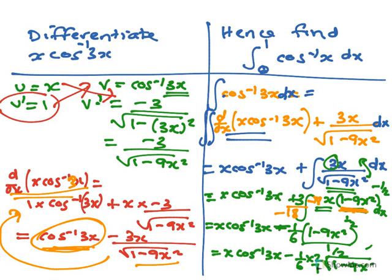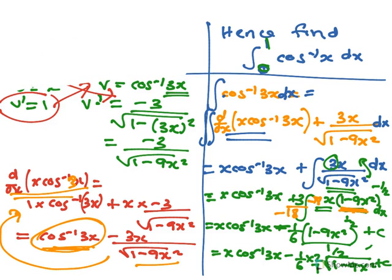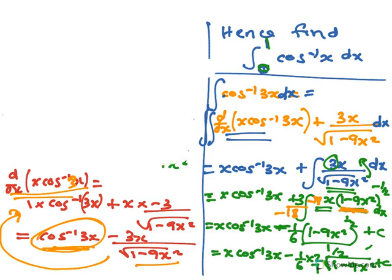So it's x·cos⁻¹(3x) minus 1/6 times 2/1, which gives the square root of 1 minus 9x², and don't forget plus c. Now we actually want to evaluate between 0 and 1, so we don't include the constant — we substitute our endpoints.